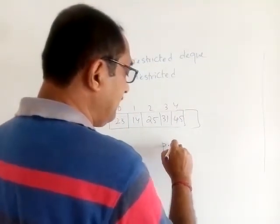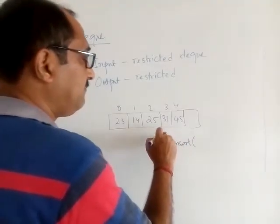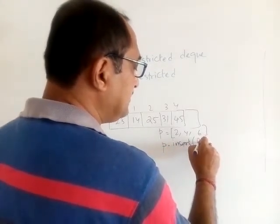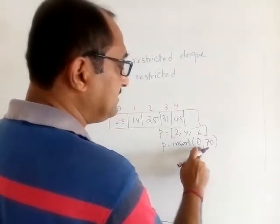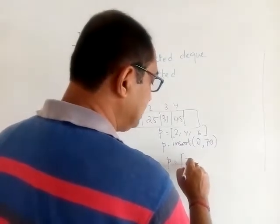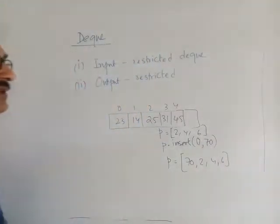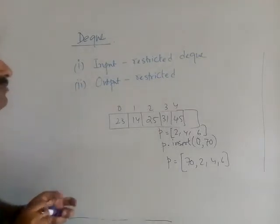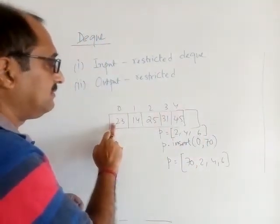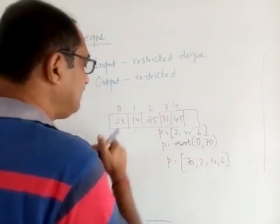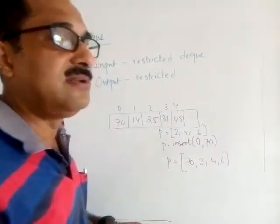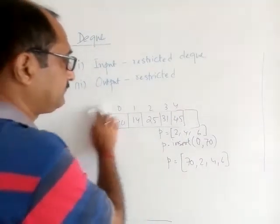For Output Restricted DQ, insertion from the rear is simple using append. To insert at the front (index 0), you use the insert function: p.insert(0, 7) inserts 7 at index 0, shifting all other elements to the right. So p = [2, 4, 6] becomes [7, 2, 4, 6]. That is how insertion from the front works in Output Restricted DQ.